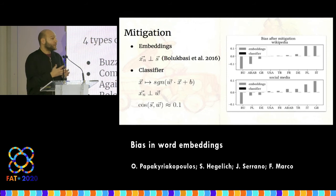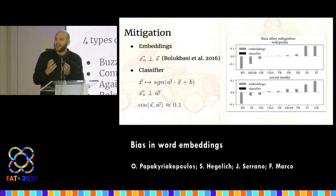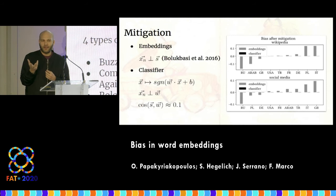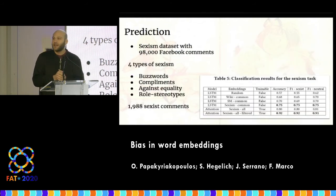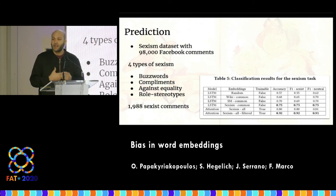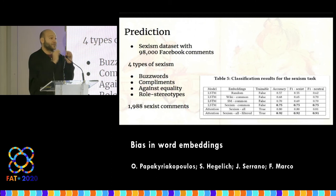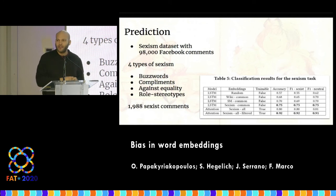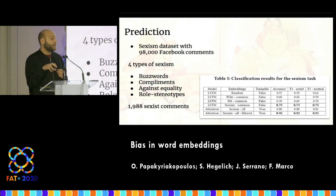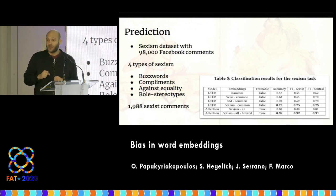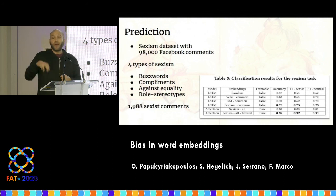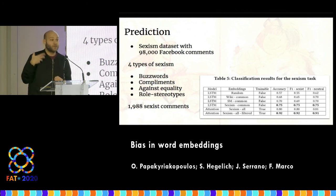We also wanted to see if we can use bias in word embeddings to predict the same bias in new data. We created a sexism dataset by classifying almost 100,000 Facebook comments as sexist or not sexist, according to specific classes of sexism as defined by social theories. We then created deep neural models that take the embeddings and predict whether a comment is sexist. We found that the more similar the bias in the word embeddings used, the better the model performed — meaning it was easier for the model to detect bias in new data.